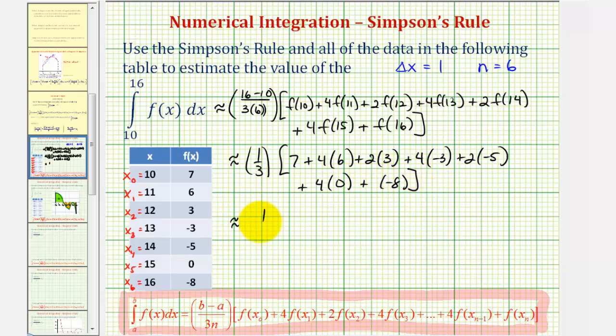So we have one-third times seven plus 24 plus six plus negative 12 or minus 12 plus negative 10 or minus 10 plus zero plus negative eight or just minus eight.